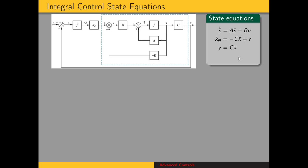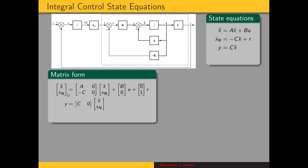Now we can combine these two equations and put them in matrix form. We have a new state vector, which is our original state vector plus this additional variable xn that we've added. We have a new matrix A that multiplies the state vector, B times the input, plus the zero vector times r. The length of the zero vector is the same as the number of state variables in our original system. And y is C times x bar plus zero times xn.